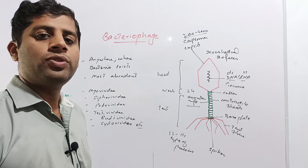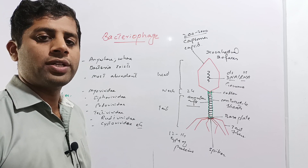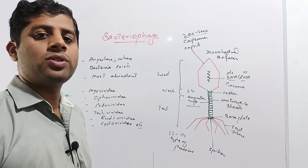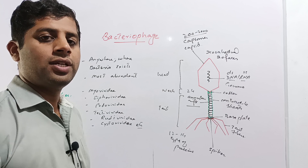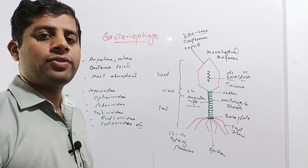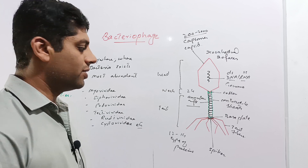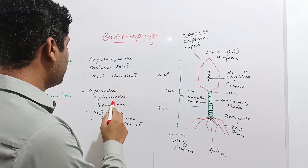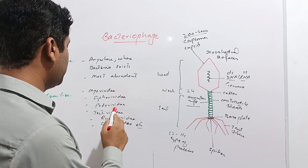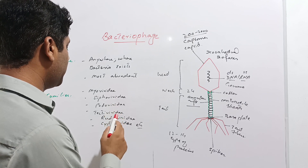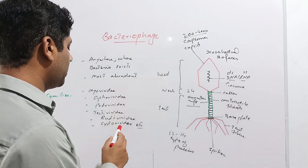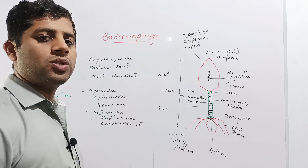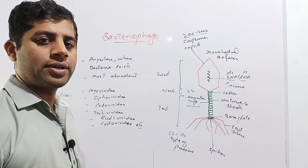Bacteriophage is a large group of viruses comprising thousands of phages. These are classified under different families, for example: Myoviridae, Siphoviridae, Podoviridae, Tectiviridae, Rudiviridae, and Cystoviridae, etc.